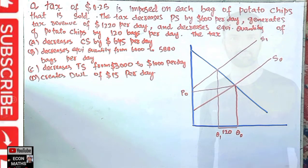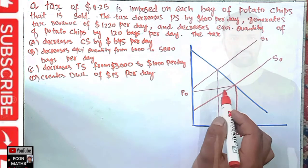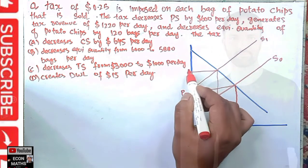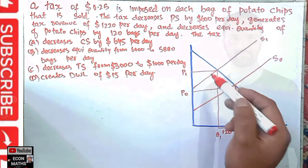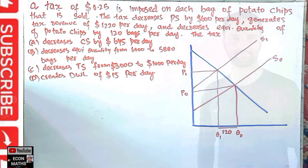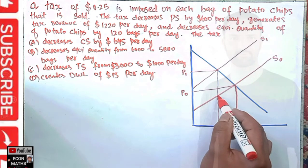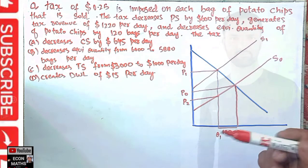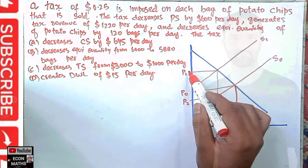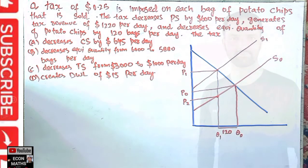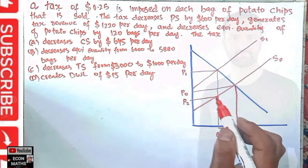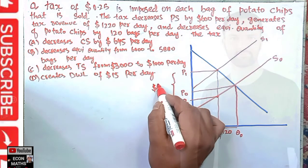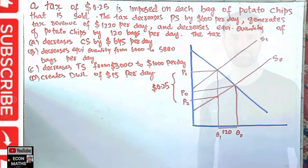After the imposition of the per unit tax, consumers will pay a higher price p₁, while producers will receive only p₂. The difference p₁ minus p₂ is our tax rate, which is $0.25. So consumers pay p₁ and producers receive p₂, with the wedge between these two prices equal to the per unit tax of $0.25.